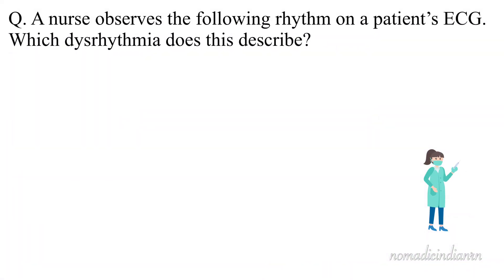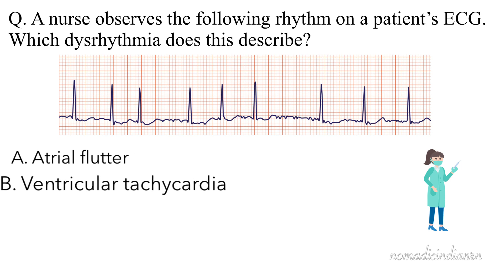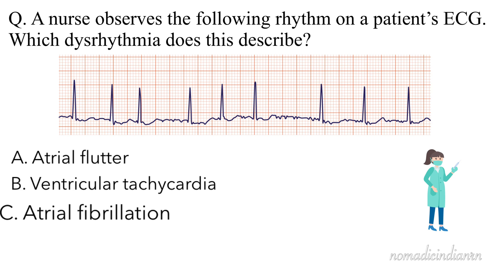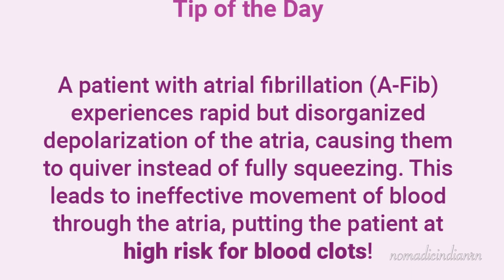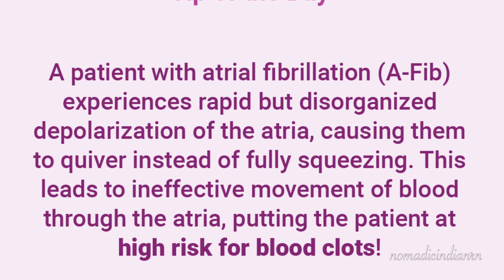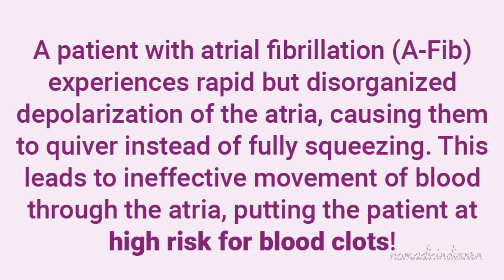Here's another question: a nurse observes a rhythm on a patient's ECG — which dysrhythmia does this describe? A. Atrial flutter. B. Ventricular tachycardia. C. Atrial fibrillation. D. Second degree heart block. The correct answer is C — atrial fibrillation. Atrial fibrillation is characterized by an irregularly irregular rhythm, absence of P waves, and variable ventricular rate, often leading to a rapid heart rate.